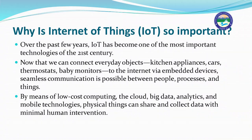Why is IoT so important? Over the past few years, IoT has become one of the most important technologies of the 21st century. We can now connect everyday objects — kitchen appliances, cars, thermostats, baby monitors — to the internet via embedded devices, enabling seamless communication between people, processes, and things. By means of low-cost computing, the cloud, big data, analytics, and mobile technologies, physical things can share and collect data with minimum human intervention.